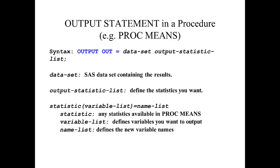So again, the statistic is any statistic available in proc means, the variable list defines the variables you want to output. So if we listed numerous variables, they would create the mean for each of those variables on our new output SAS data set. And then we can create new variable names for those new variables. This will become clearer as we go through the demonstration video.